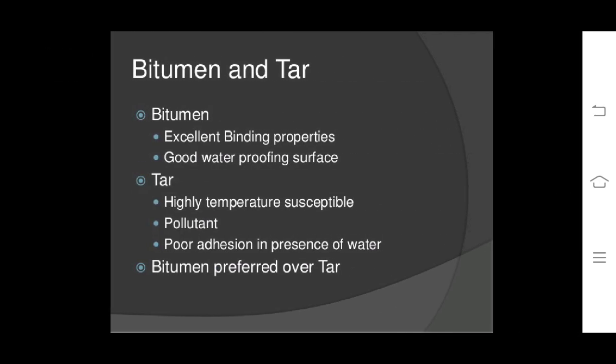Bitumen has excellent binding properties and good waterproofing properties; therefore, it is used for waterproofing purposes also. Whereas tar is highly temperature susceptible, a pollutant, and has poor adhesion in the presence of water. Bitumen is preferred over tar for all types of works.